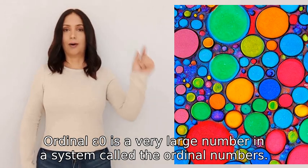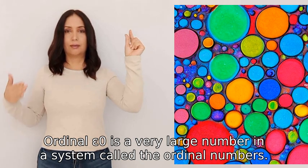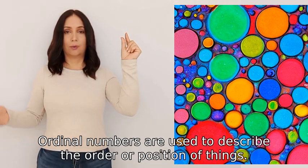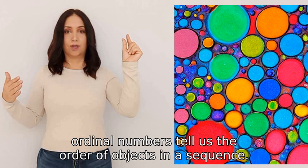Ordinal epsilon zero is a very large number in a system called the ordinal numbers. Ordinal numbers are used to describe the order or position of things. Just like how we have numbers to count objects, ordinal numbers tell us the order of objects in a sequence.